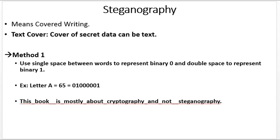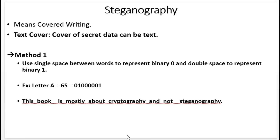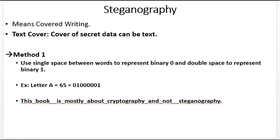In this video, I will be explaining text cover and image cover. Text cover is covering the secret data by overlapping text. The text cover includes many methods; the first method is using spaces between words — use a single space between words to represent binary 0 and a double space to represent binary 1. An example: the letter A, whose ASCII value is 65 and binary value is 01000001, can be covered by the text. In the sentence 'This book is mostly about cryptography and not steganography,' after 'this' we have one space, which represents 0.